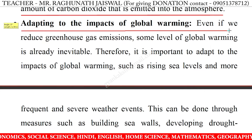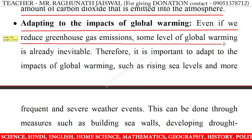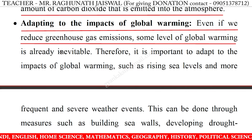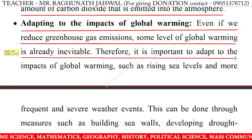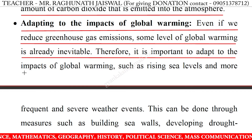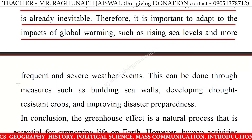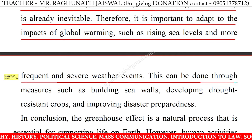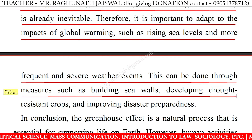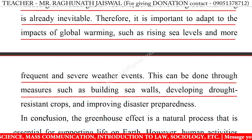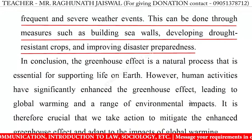Adapting to the impacts of global warming: even if we reduce greenhouse gas emissions, some level of global warming is already inevitable. Therefore, it is important to adapt to the impacts of global warming, such as rising sea levels and more frequent and severe weather events. This can be done through measures such as building sea walls, developing drought-resistant crops, and improving disaster preparedness.